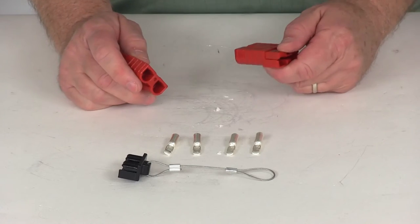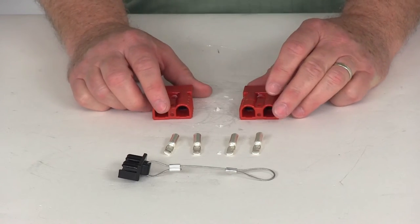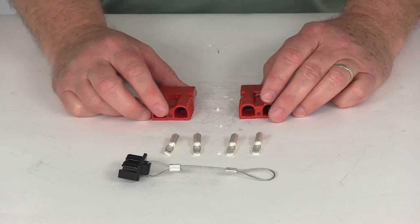Now this quick connect set will allow you to connect and disconnect your Bulldog Power Sport winch from your ATV or UTV.